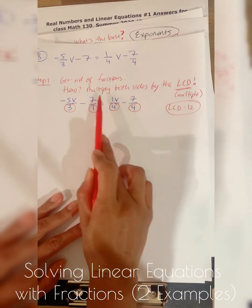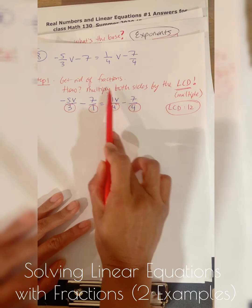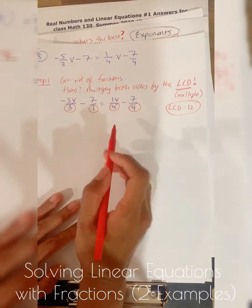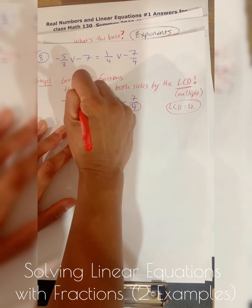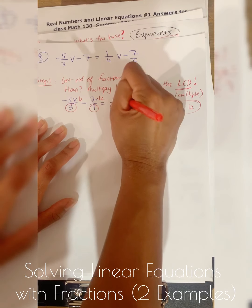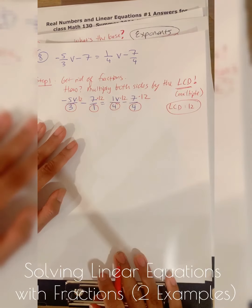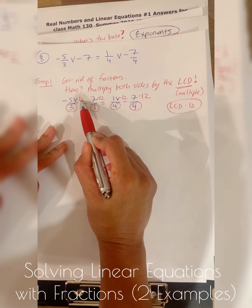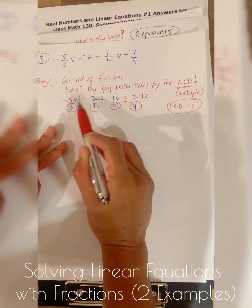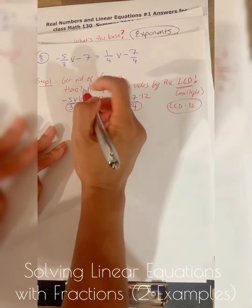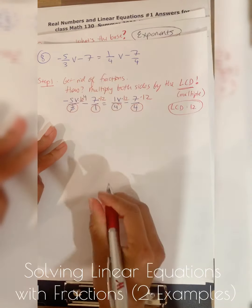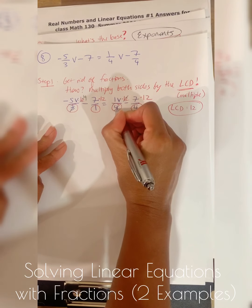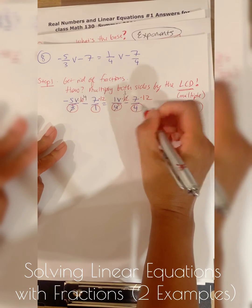Because I want to get rid of fractions, I'm going to multiply both sides by the lowest common denominator, which is 12. I multiply everything by 12 on top. What this does is cancel out with the denominator: 12 over 3 divides out to become 4; 12 over 1 is just 12; and 12 over 4 divides out — 12 divided by 4 becomes 3.